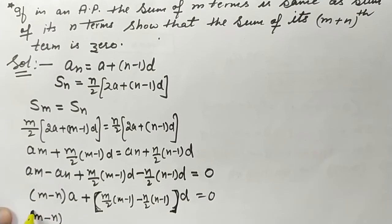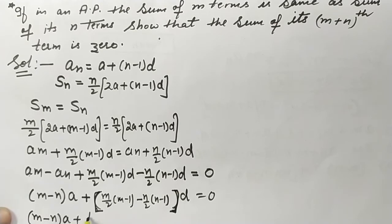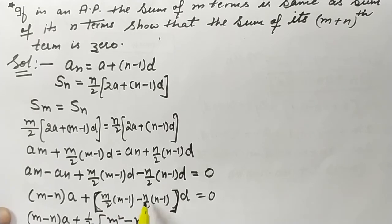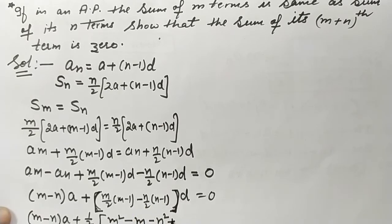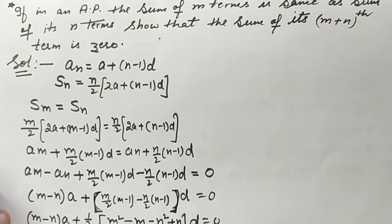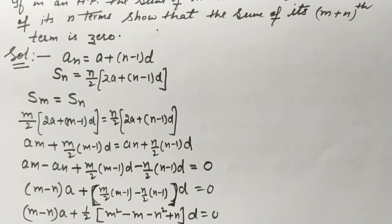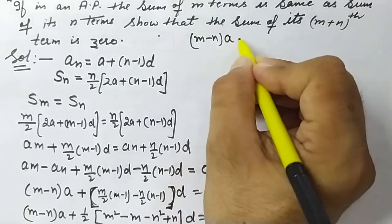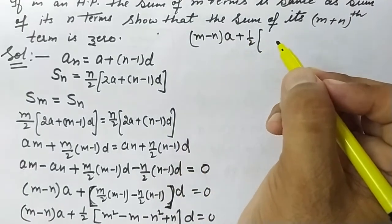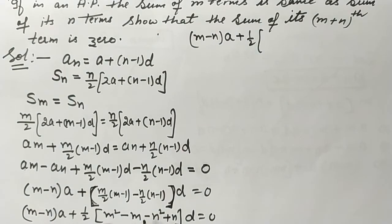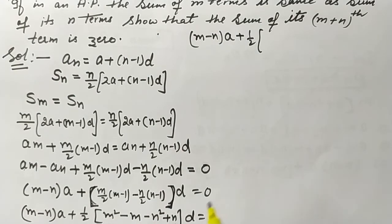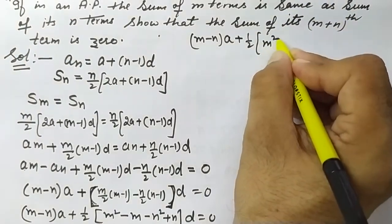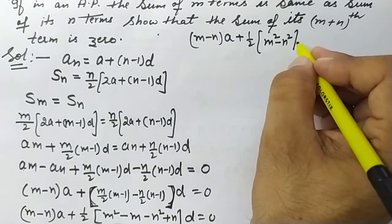Expanding inside the bracket: m(m−1) = m² − m and n(n−1) = n² − n. So we have a(m−n) + 1/2 · d · (m² − m − n² + n) = 0. The terms m² − n² can be grouped together, and −m + n can be grouped, giving a(m−n) + 1/2 · d · [(m² − n²) + (n − m)] = 0.